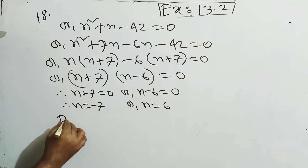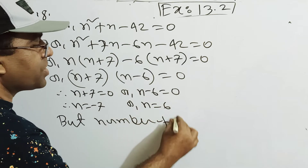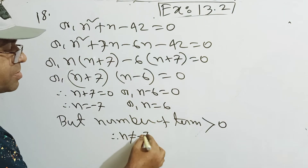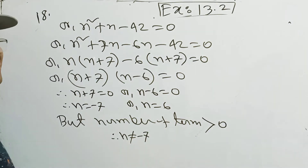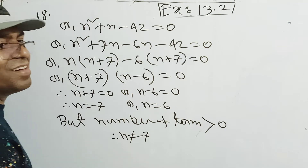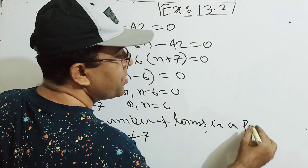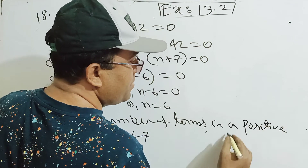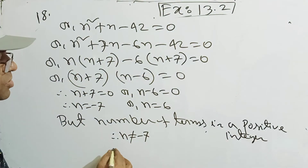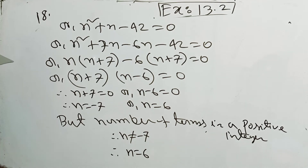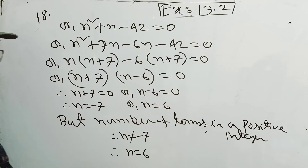But the number of terms must be greater than 0 — it must be a positive integer. N equals minus 7 is not a positive integer, so we reject it. Therefore N equals 6.